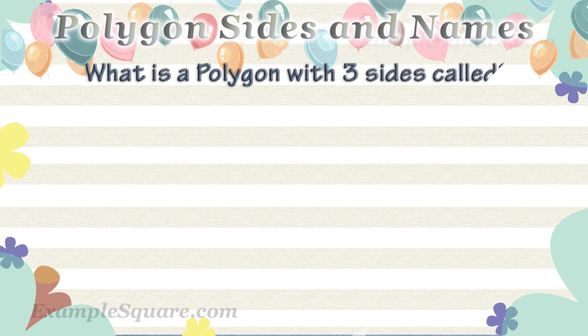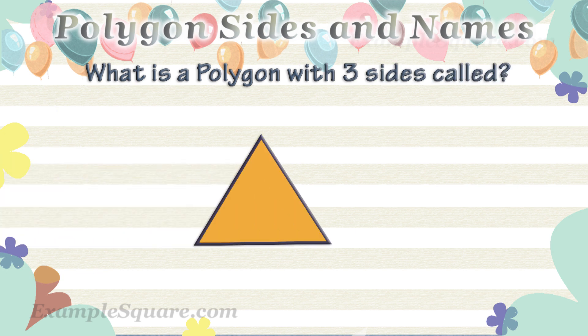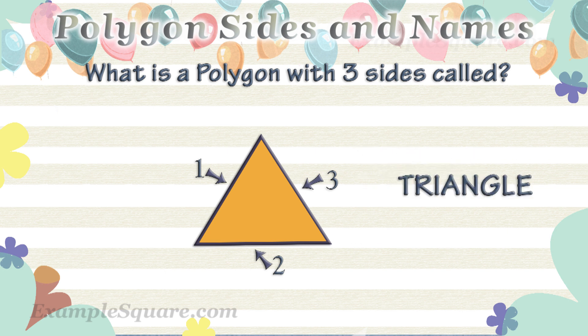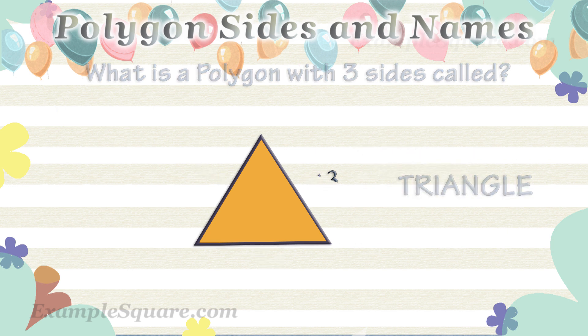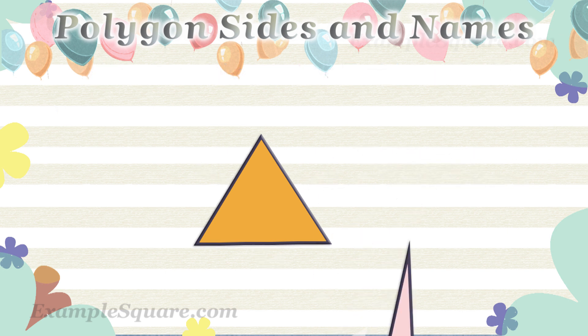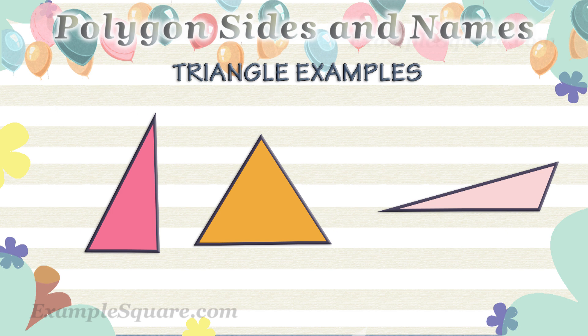What is a polygon with three sides called? A polygon with three sides is called a triangle. These are some examples of triangles.